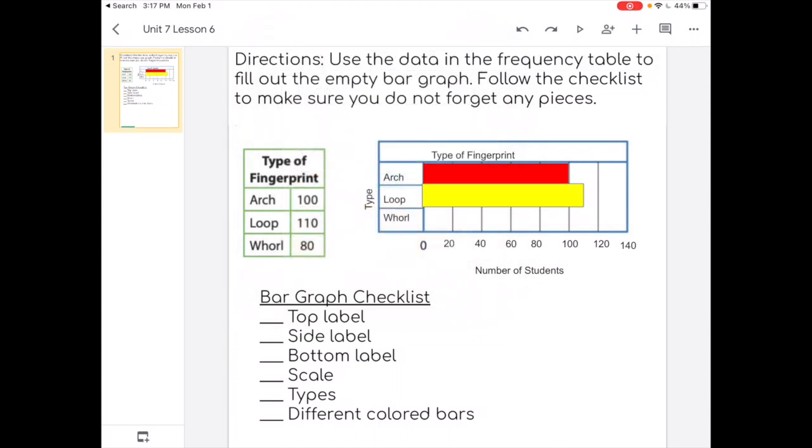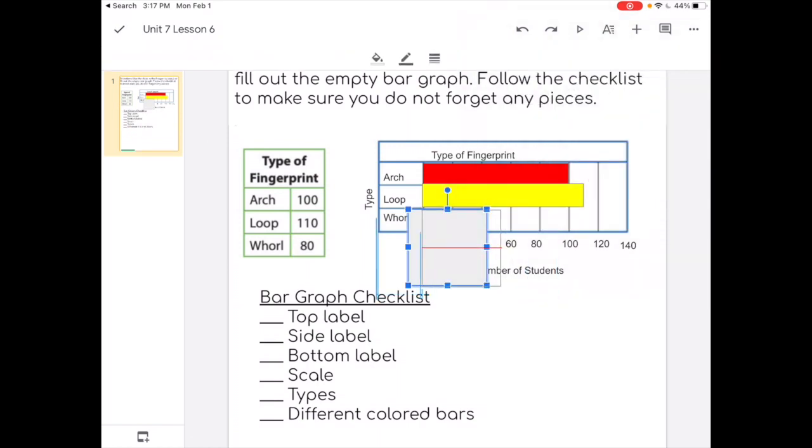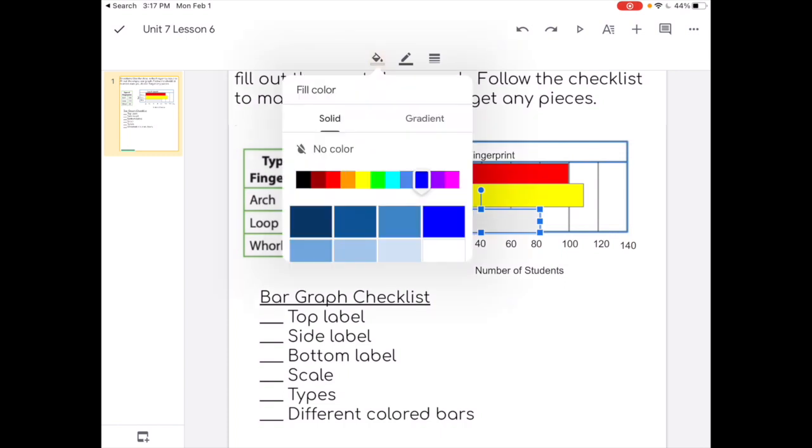And then I have one more, whorl. And it has a value of 80. So that one didn't come up as much as the other two. And let's make this one blue.